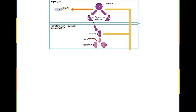Next, the cell transforms the molecule of pyruvate into a molecule of acetyl-CoA. This is a preparation phase because the molecule of pyruvate the way it is cannot go to the next phase of cellular respiration. This is usually called the grooming phase, pyruvate grooming, or pyruvate oxidation.